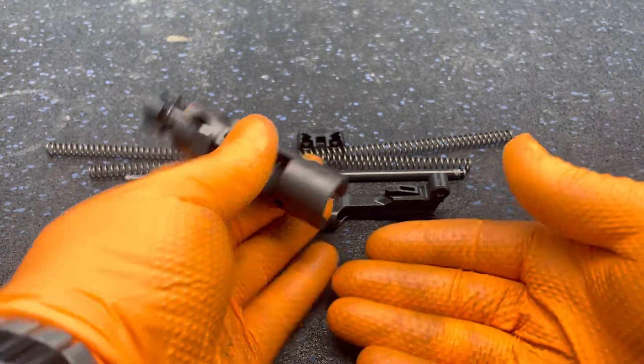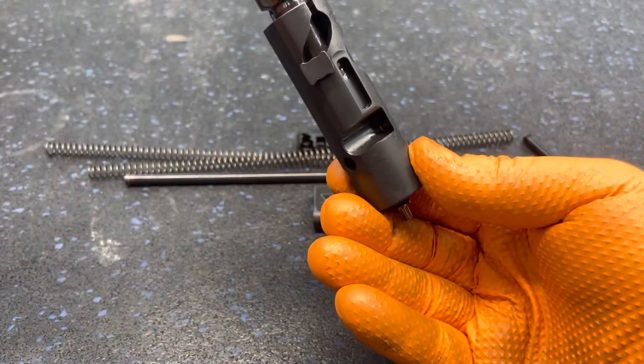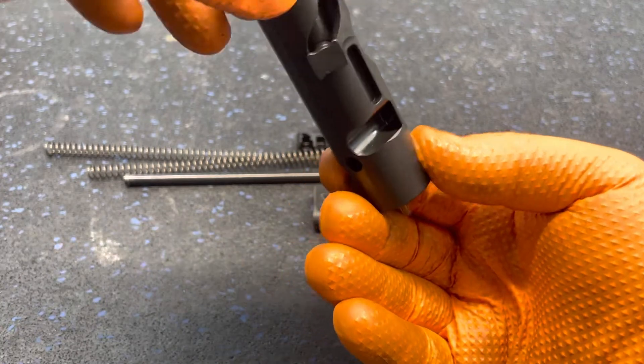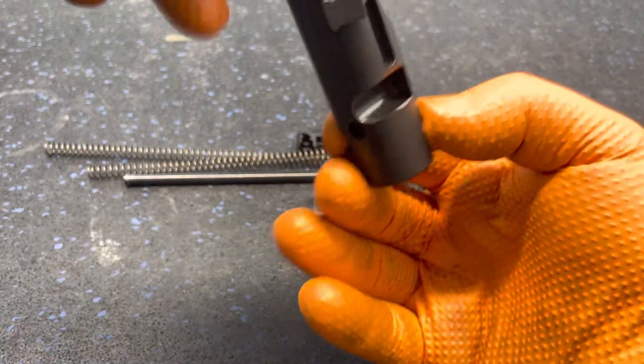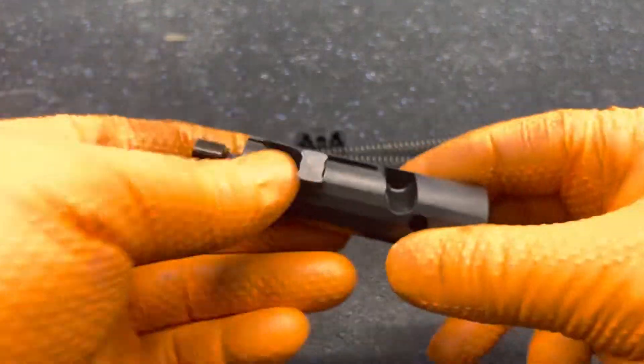Once that pin is out, the firing pin and spring should fall out. If they don't just fall out on their own, hold it vertically and move the bolt assembly up and down a few times and they should be able to fall free or you can grab them and pull them out.